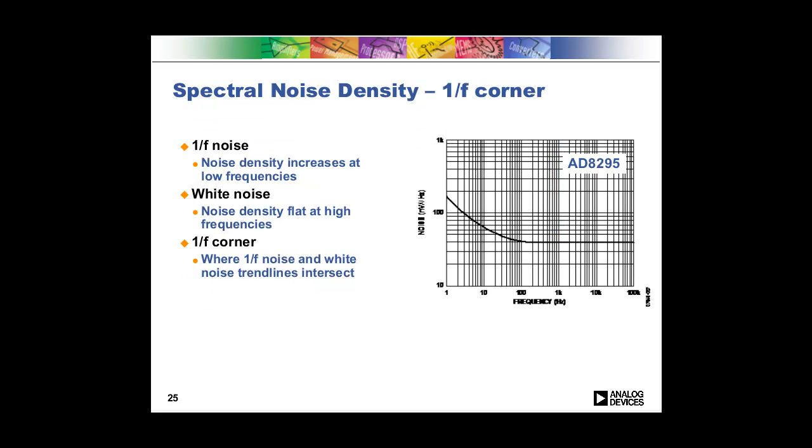You'll notice on the spectral noise density plot that we're talking about, you'll notice that upward sloping curve there on the left, where the noise density gets bigger as your frequency gets lower. And that's called the one over F noise region. And this is a common behavior in amplifiers. You'll find this in the vast majority of amplifiers.